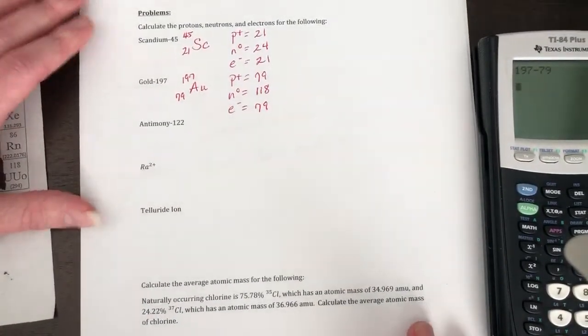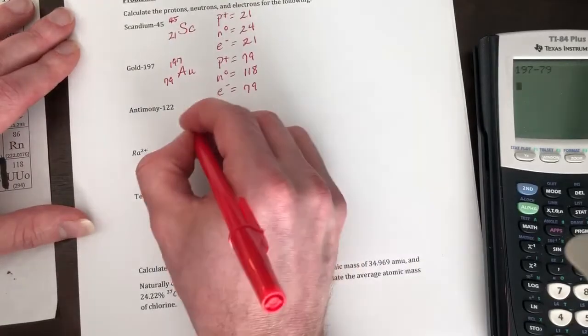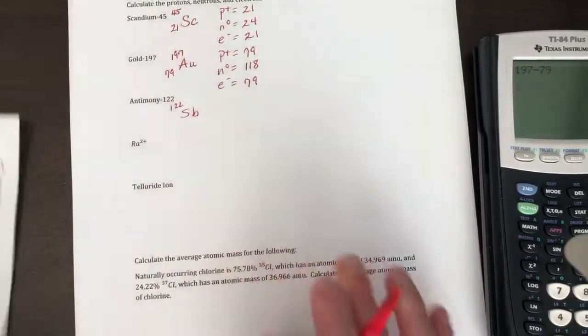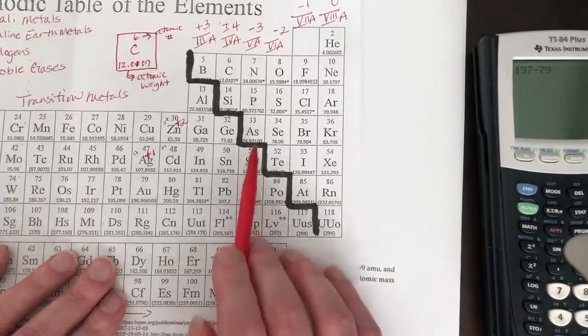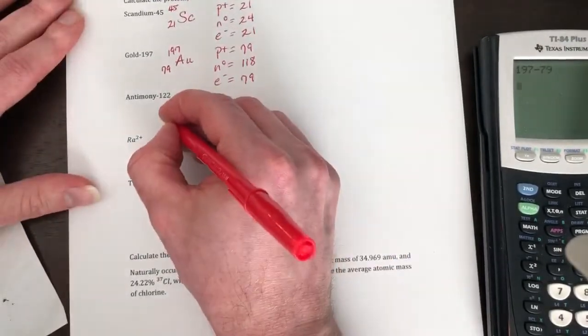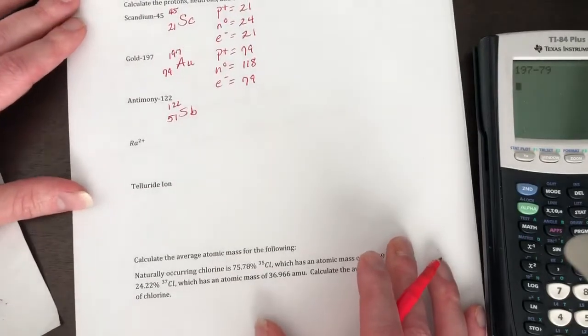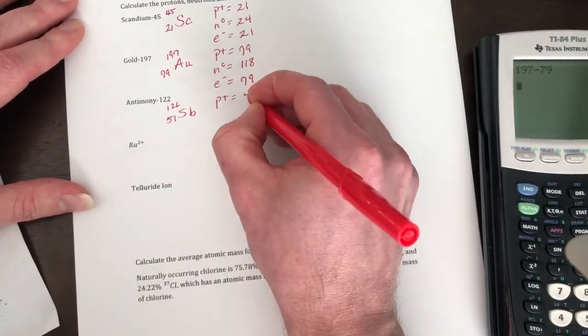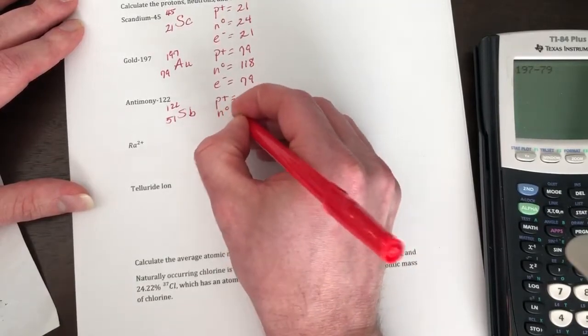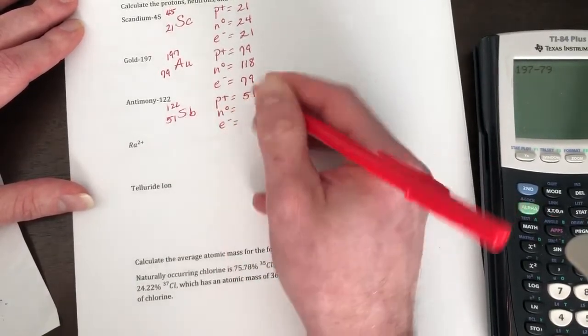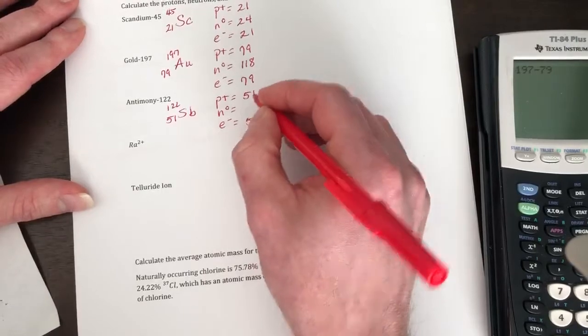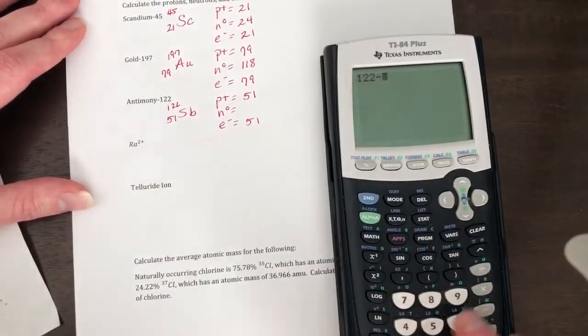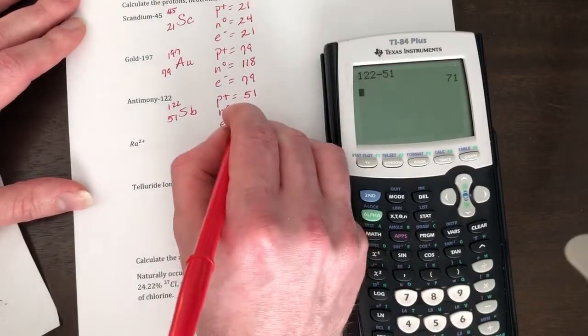Antimony, symbol for antimony is SB. It gives us the mass is 122. SB is right here, has atomic number 51. So your protons are gonna be equal to 51. Your electrons are gonna be equal to 51. Your neutrons are gonna be 122 minus 51, which is 71.